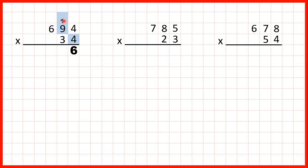Again, we have a two-digit number, so we need to write that 37 with the first digit above the next place value column. Now we have 6 times 4, which is 24, but we need to add 3, and 24 plus 3 is 27. We don't have any more digits to the left, so although it's a two-digit number, we can just write the 27 in our answer line.